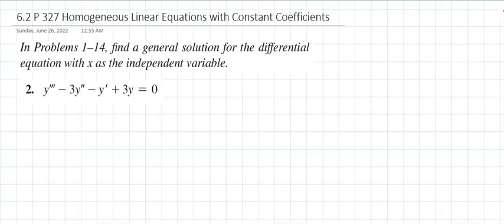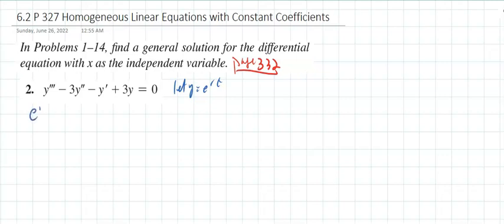Section 6.2 covers homogeneous linear equations with constant coefficients. Starting with a third-order linear ODE with constant coefficients, we let y equal e to the rt. Substituting, we get e to the rt times r³ minus 3r² minus r plus 3 equals zero.